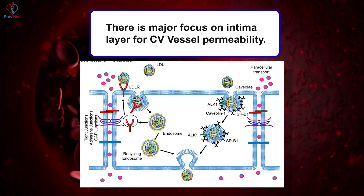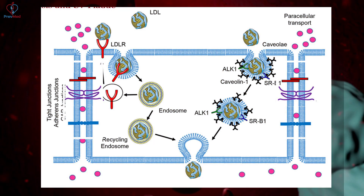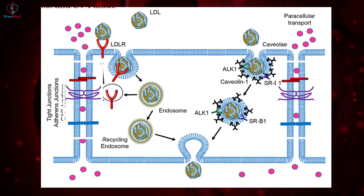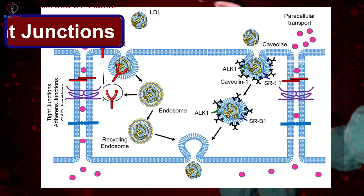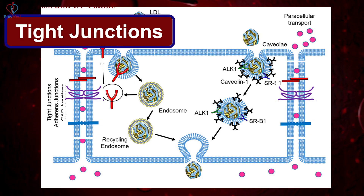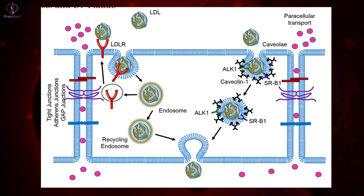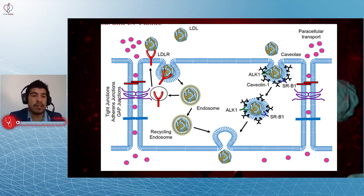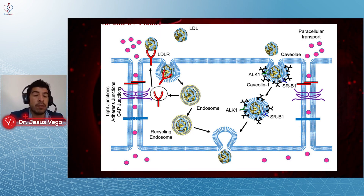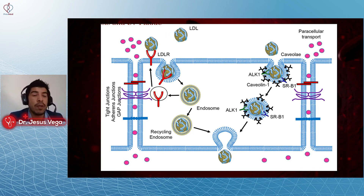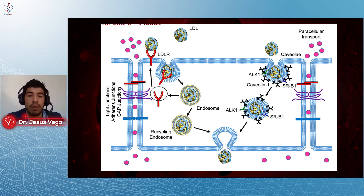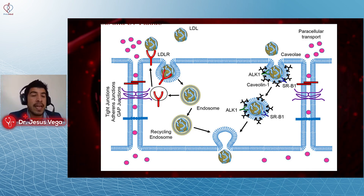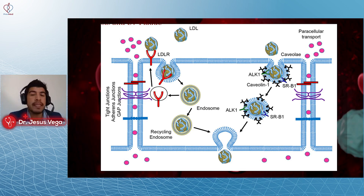There's a major focus on the intima layer for cardiovascular vessel permeability. If you imagine an artery or a vessel, you will see that they have like these kind of blocks, brick layers that are side by side. They are usually united through these things called tight junctions, similar to the intestine layers. These are living parts of the body with specific functions that need to maintain a balance between fluids, salt, electrolytes, and other enzymes.